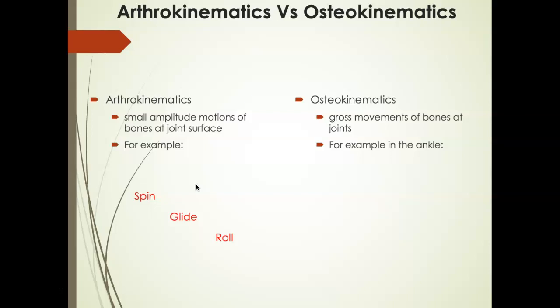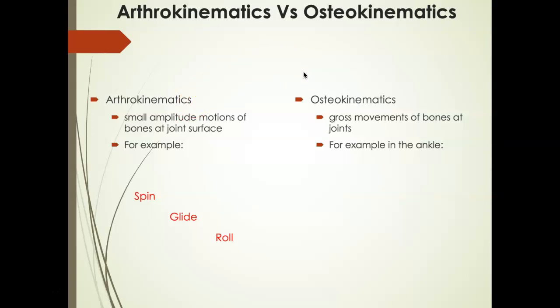Osteokinematic motion is what we see — gross movements at the joint such as dorsiflexion, plantarflexion, inversion, and eversion. In order for those large gross osteokinematic motions to occur, we had to have a bone spin, glide, or roll across one another. Arthrokinematic motion is the subtle motion we don't see that happens between bones, and that arthrokinematic motion essentially produces osteokinematic motion — the larger gross movement we see: knee flexion, ankle dorsiflexion, ankle plantar flexion, toe extension. All are osteokinematic motions driven by arthrokinematic motion between the two bones.